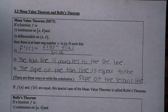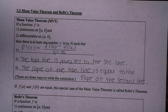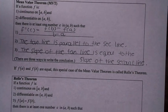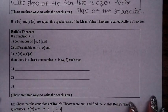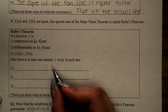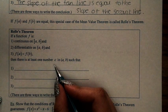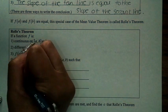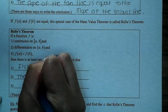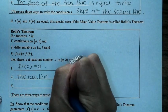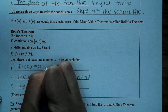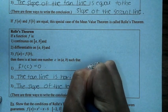Back in the day, a guy named Rolle discovered that if f(a) and f(b) are equal, we have a special case of the mean value theorem called Rolle's theorem. Rolle figured out that if you have a function continuous on the closed interval [a,b], differentiable on the open interval (a,b), and f(a) equals f(b), then there exists at least one number c inside (a,b) such that f prime of c is equal to zero. Verbally, this means the tangent line is horizontal — the slope of the tangent line is zero.